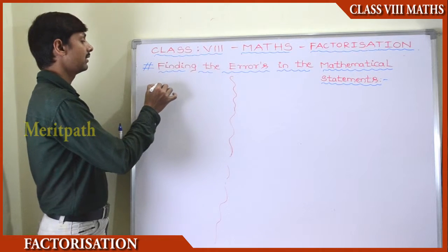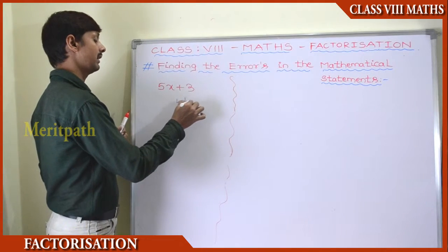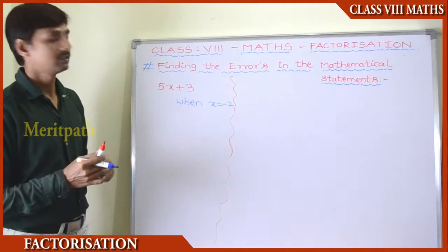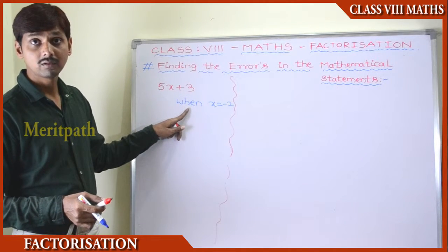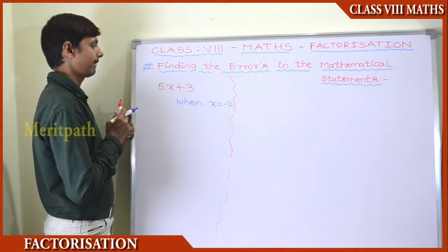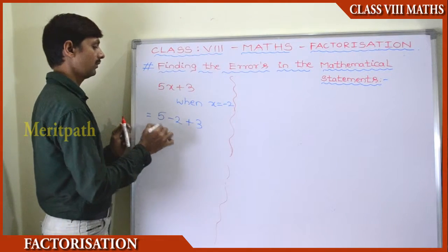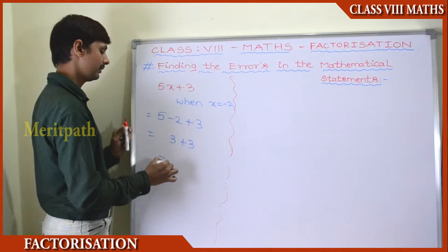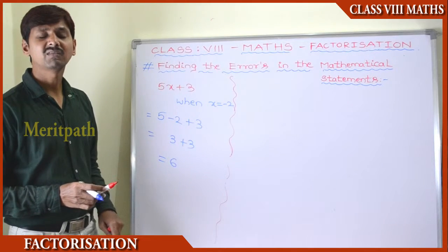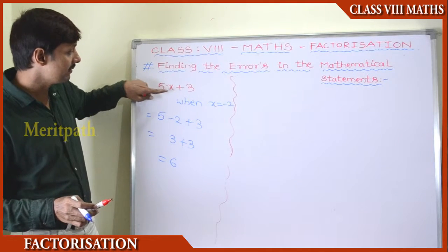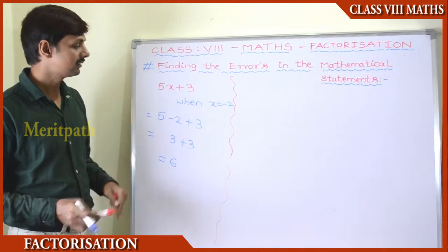Let's take the expression 5x + 3 and find its value when x = −2. A common mistake is to substitute −2 directly: 5 × −2 + 3 = −10 + 3... but wait — some do it incorrectly as 5 − 2 + 3 = 6. This is the wrong process. We need to identify where the mistake is.